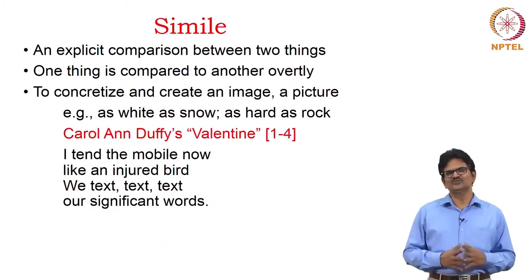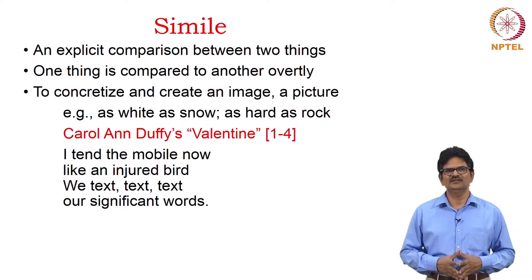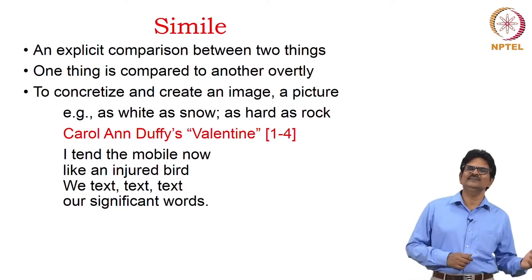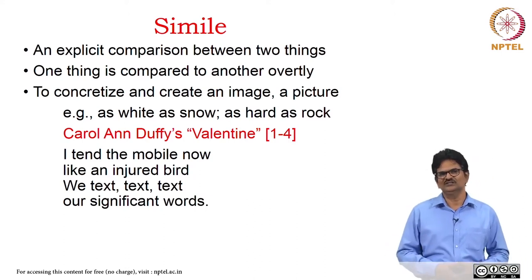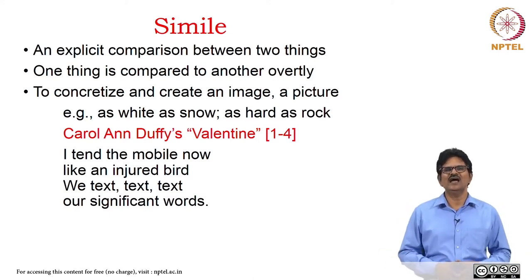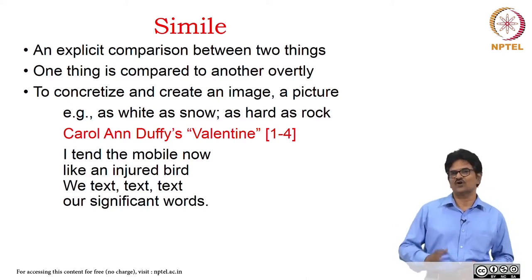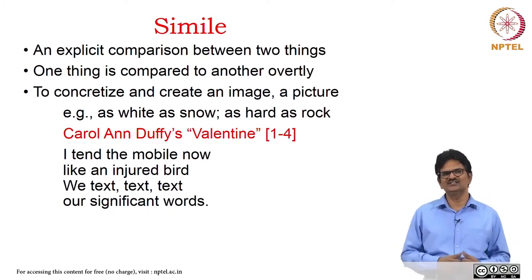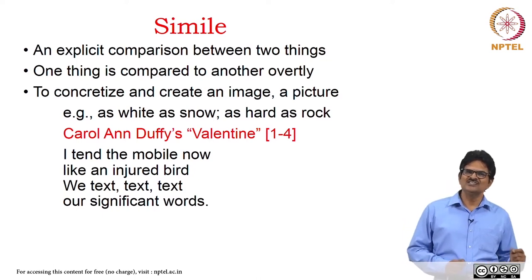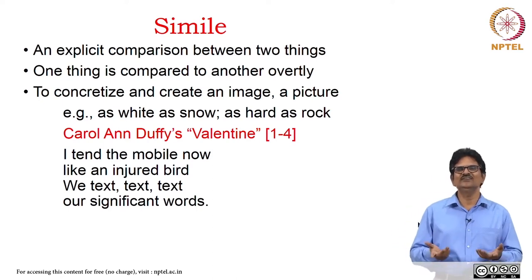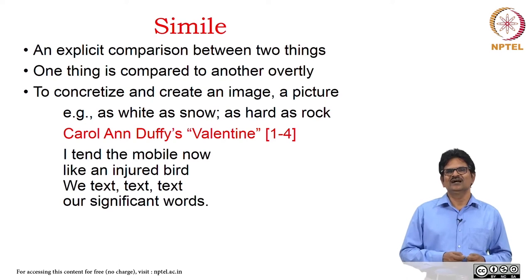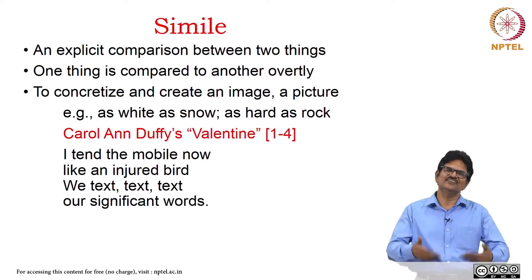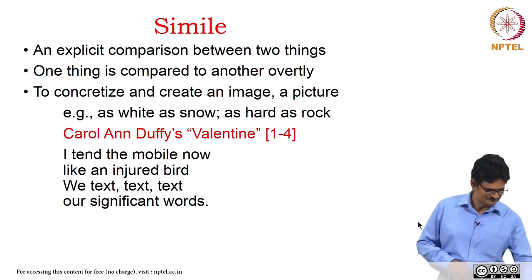Very close to metaphor, we have the next figure of thought: simile. A simile is an explicit comparison between two things — one thing is compared to another very clearly, explicitly. To concretize and to create an image or a picture, a poet uses similes. In common parlance we have expressions like 'as white as snow' or 'as hard as rock.' Another contemporary British poet, Carol Ann Duffy, in her poem 'Valentine,' reads: 'I tend the mobile now like an injured bird. We text, text, text our significant words.' The mobile — a machine — is treated like an injured bird by the poet. So we have this explicit comparison between the mobile and the bird.